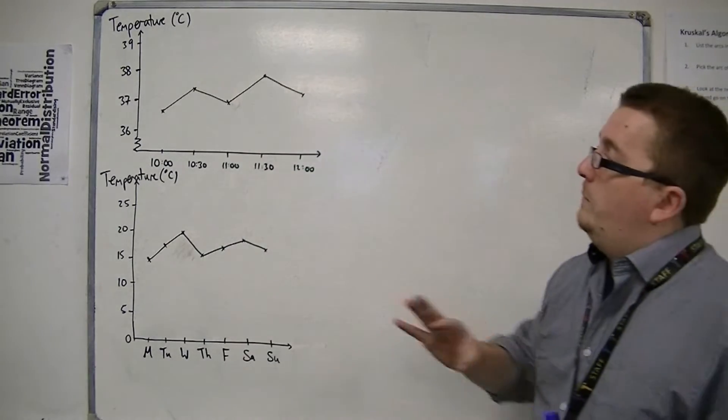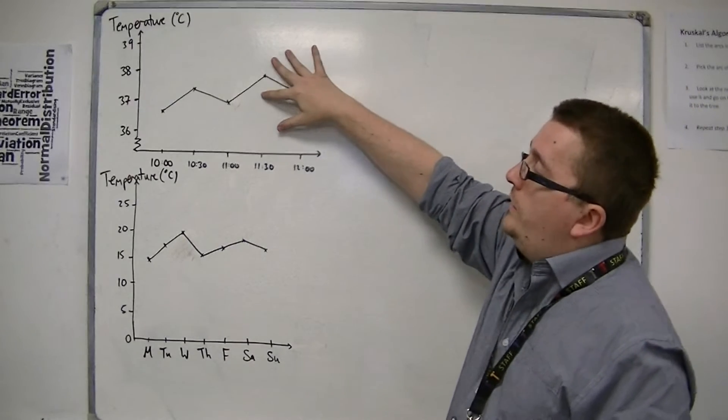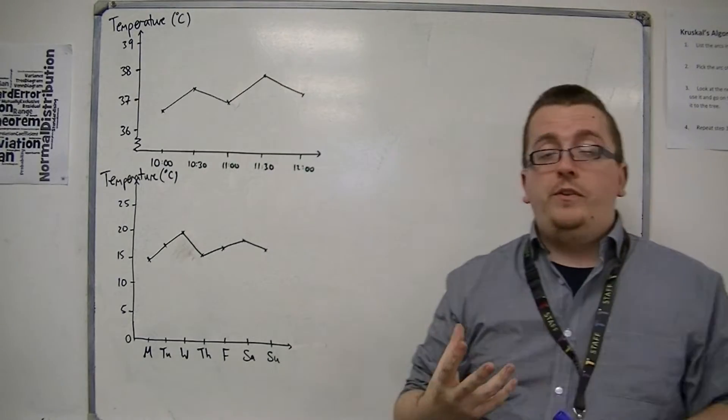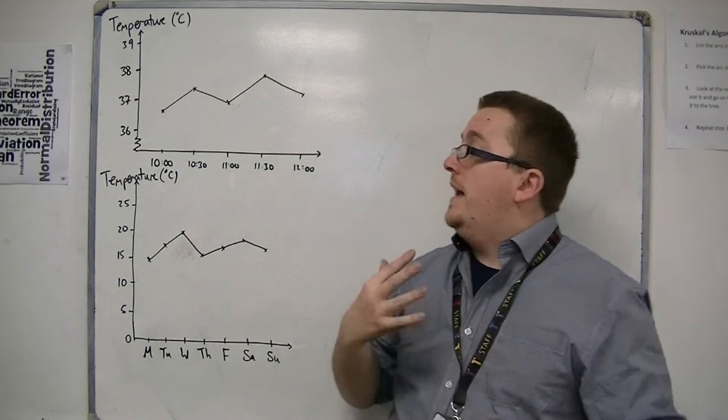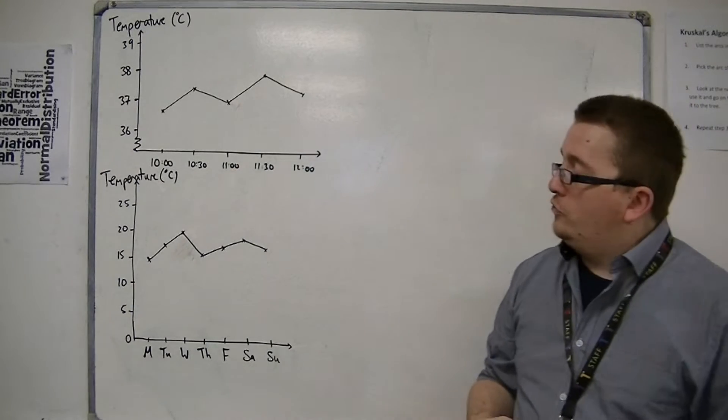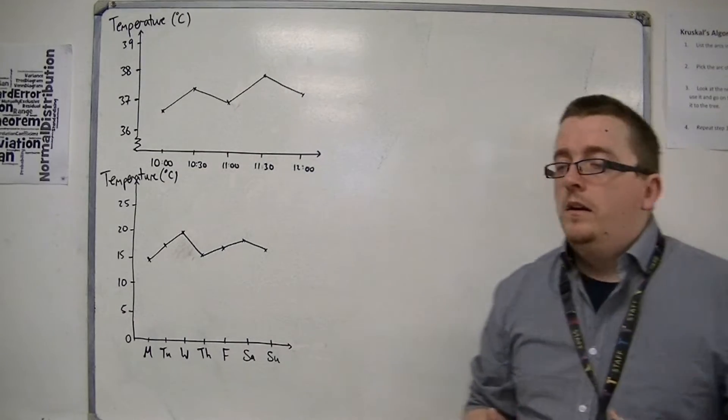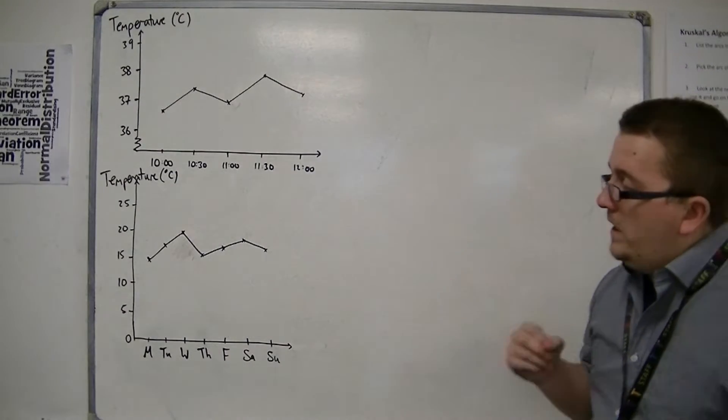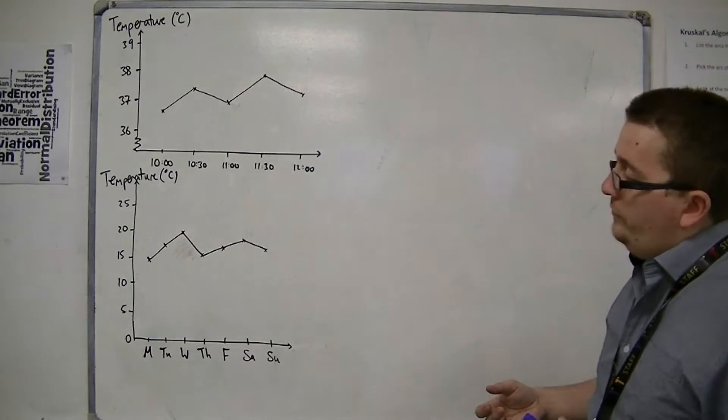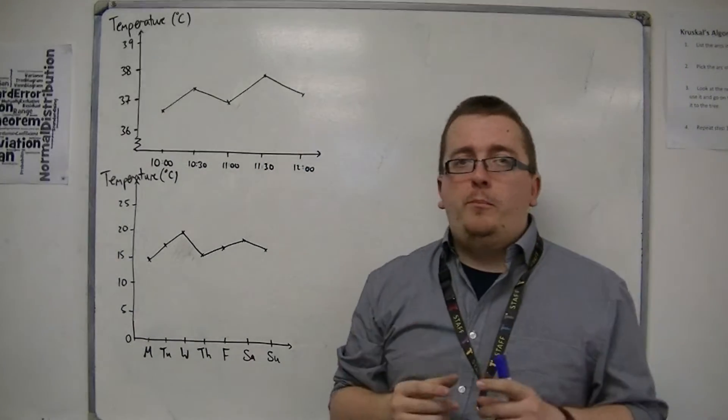So what I've done is I've set up two examples here of time series. This is to do with a patient at a hospital and the temperature of that patient is taken every half hour. And then this is a time series graph showing the temperature at midday in a particular city, let's say Southampton for example. So first of all, let's look at this. A few things to point out first.